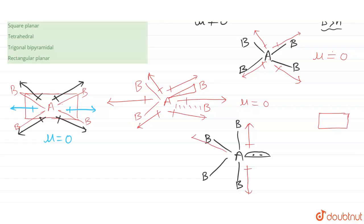For the three equatorial bonds, the dipoles point in certain directions and the net equatorial dipole is in a particular direction. Now considering the lone pair — the head of the dipole vector points towards the lone pair. The net equatorial dipole and the lone pair dipole are not going to cancel each other because they are not equal in magnitude. One is due to the lone pair and the other is the net dipole due to the A-B bonds. So they do not cancel each other, meaning the net dipole moment mu is non-zero.